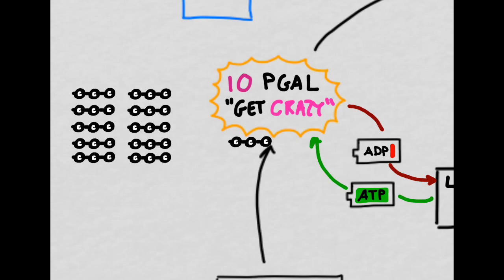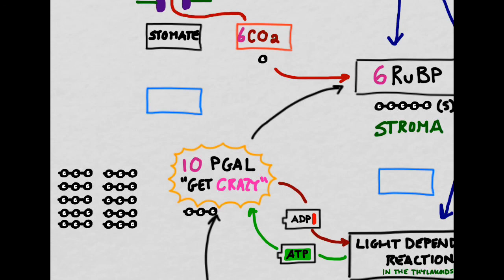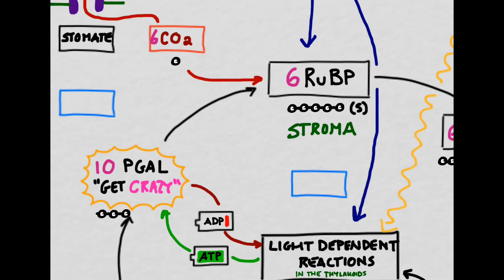The 10 PGAL start off as 10 groups of three carbons each, for a total of 30 carbons. After the get crazy step, we still have 30 carbons, but they've rearranged themselves to become six groups of five carbons each, also known as six RUBP, and the cycle can begin again.